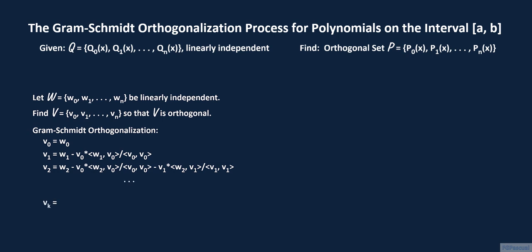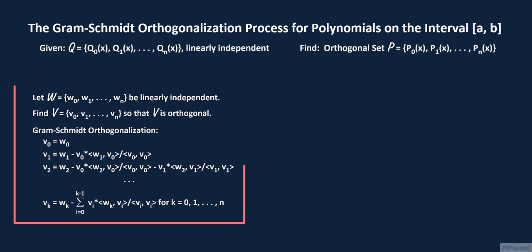The general formula for V sub k, for k equals 0 to n, is W sub k minus the sum from i equals 0 to k minus 1 of V sub i times the inner product of W sub k and V sub i divided by the inner product of V sub i with itself. One can show inductively that the set V is an orthogonal set. We leave this as an exercise for the viewer.